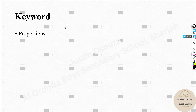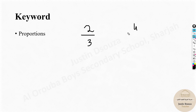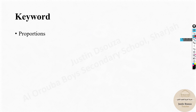Before we go to proportions, I hope you remember ratios. If I say a ratio like two divided by three, that means two parts of three parts. A proportion means two ratios — for example, two by three and four by six — that are equal to each other. If two ratios are equal and you place an equal sign between them, that is a proportion.